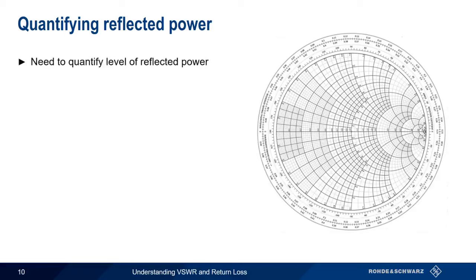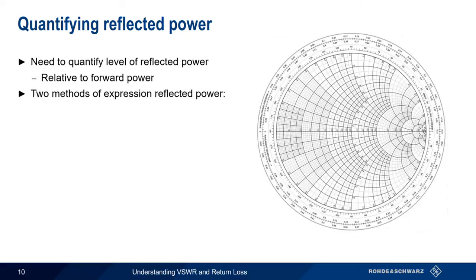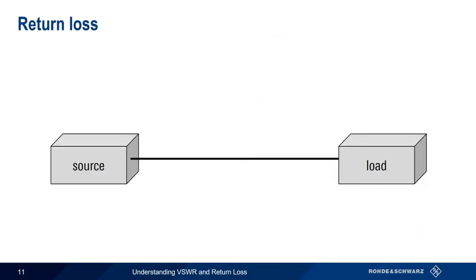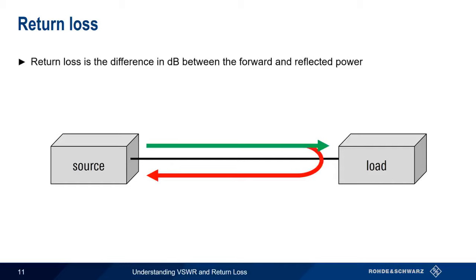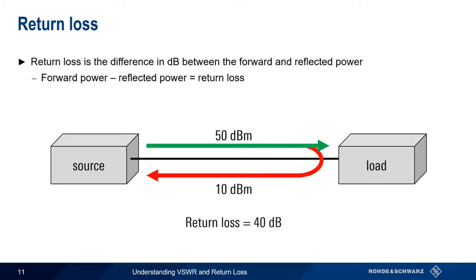Most real-world devices fall somewhere in between these extremes. So clearly it's important that we have some way of quantifying the level of reflected power relative to the level of forward power. There are two different ways this relationship is quantified: return loss and voltage standing wave ratio, commonly called either VSWR or VISWR. Return loss is nothing more than the difference in dB between the transmitted and reflected power — forward power minus reflected power equals return loss. For example, if forward power is 50 dBm and reflected power is 10 dBm, we have a return loss of 40 dB.